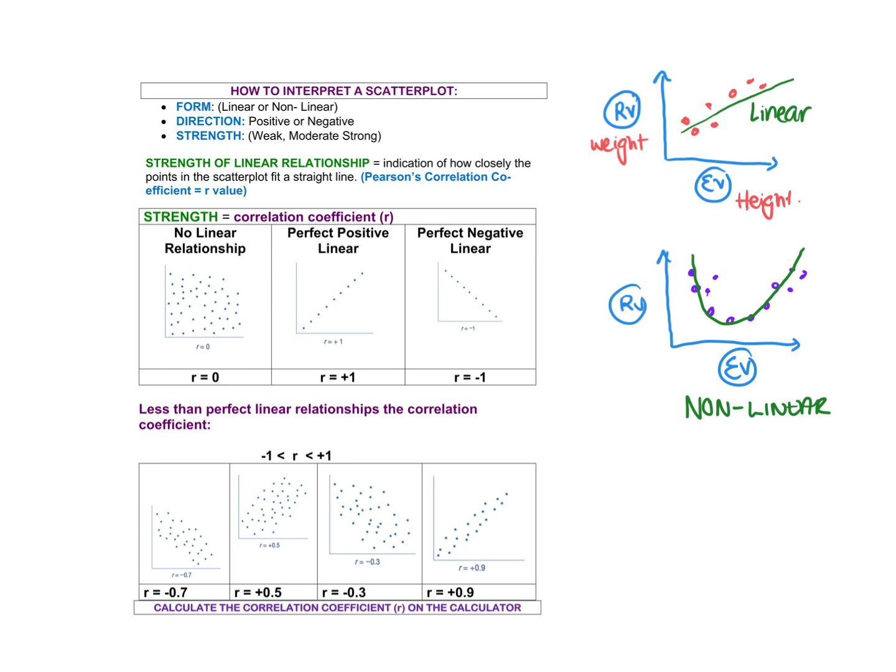When you go into year 12, we do a bit more where we prove that it is linear — there are a few tests and things. So that's the first thing we discuss: whether it's linear, non-linear, or not associated at all. If it was all random, you'd just say there's nothing there. The next thing we're going to talk about is direction.